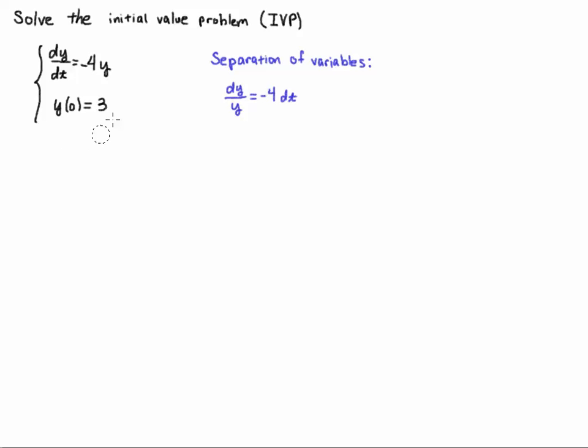We're going to use separation of variables and if you go back and review your definition for separation of variables, you'll notice that I'm going to view this problem as this minus 4 is going to be the function of t and it's still a function of t, it's just a constant function.